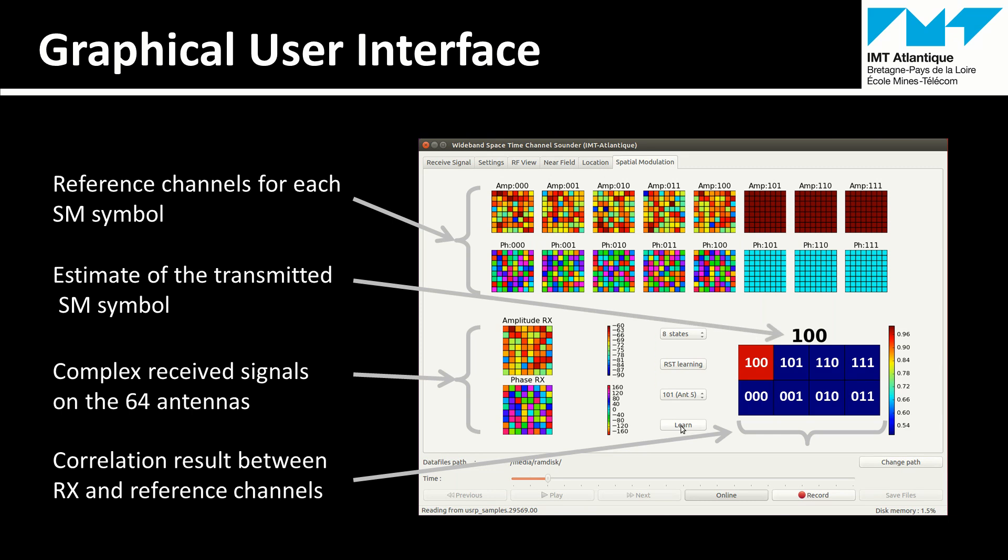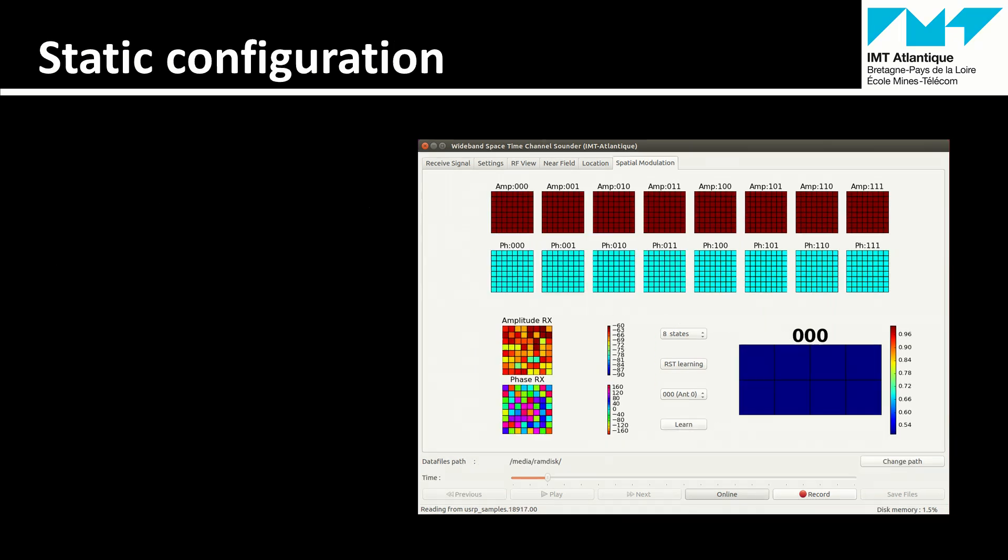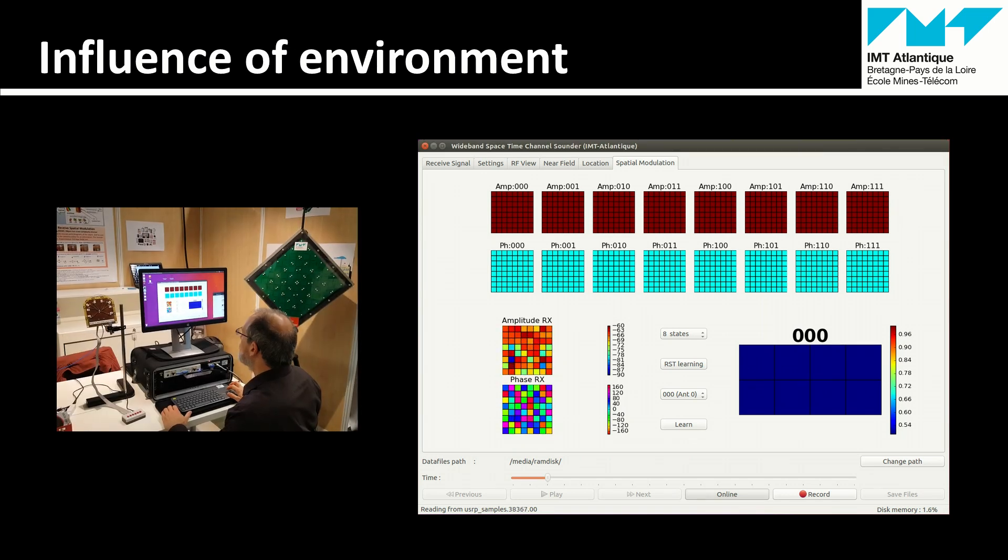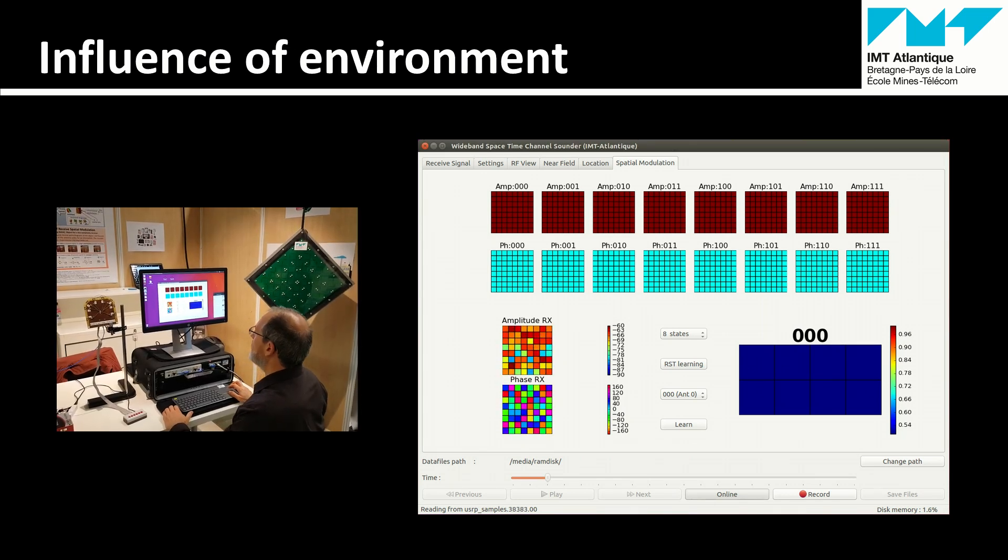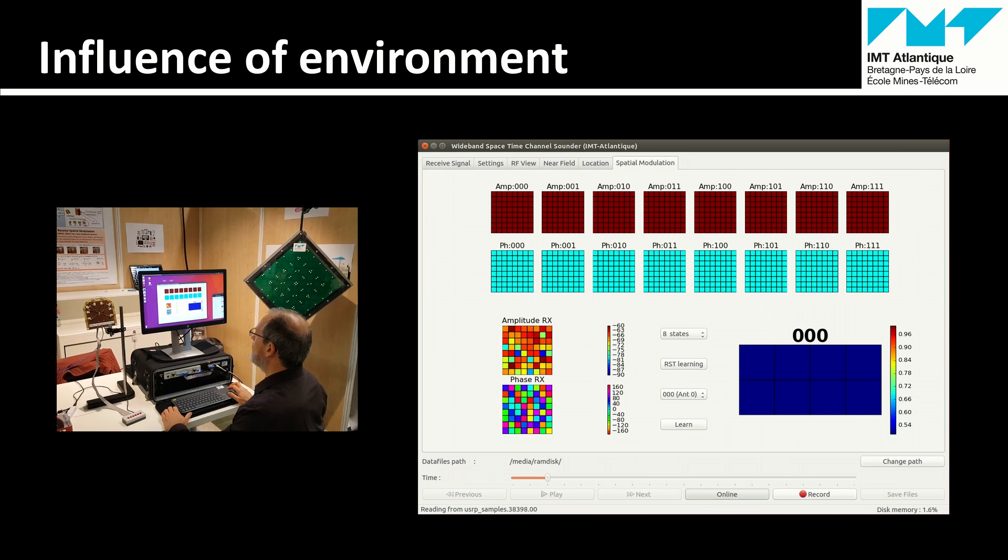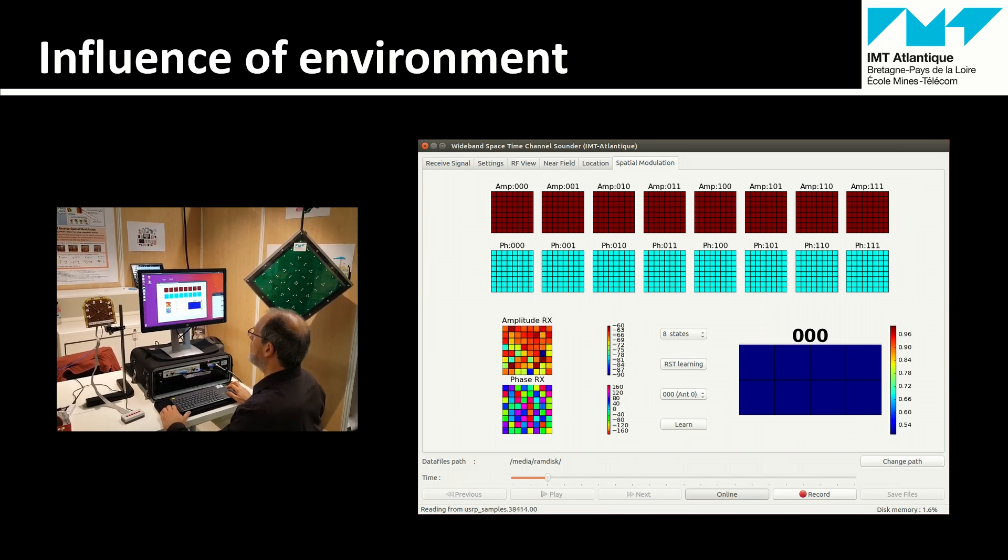This is an example of static channel recorded just before the opening of the conference. If I don't move, you can see that the amplitude and phase of the channel is really stable. Now an example during the day with people moving around. The channel is changing a little more.